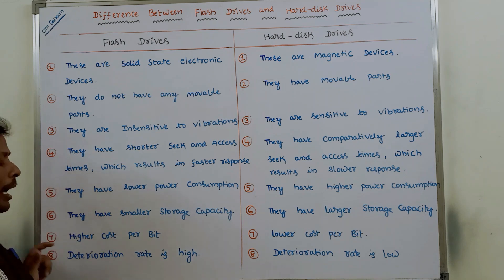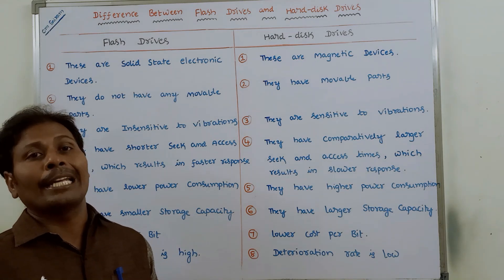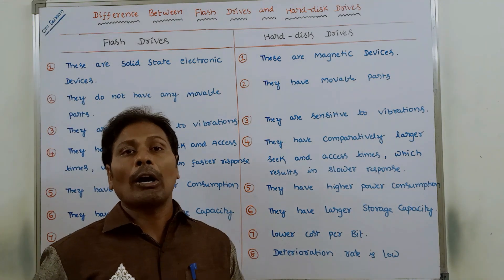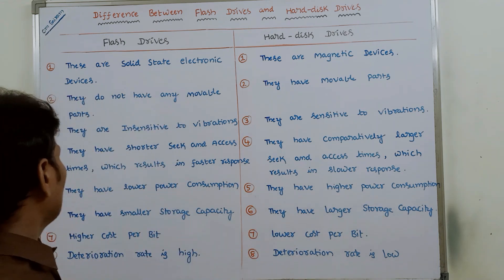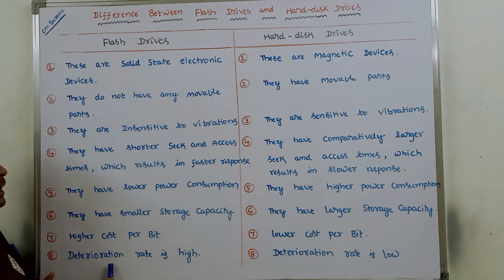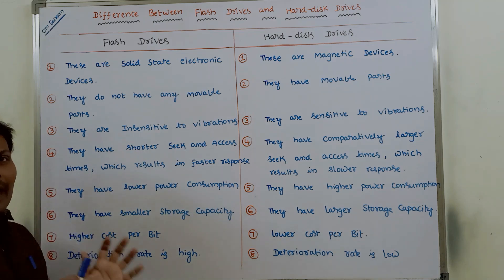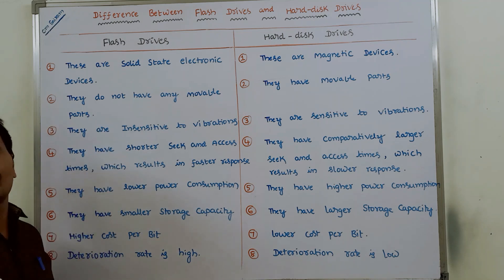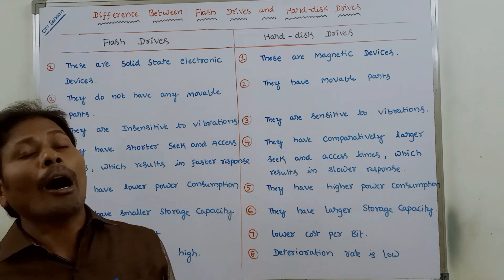The seventh point is that flash drives have a higher cost per bit — to store 1 bit of information in a flash drive, it takes higher cost, whereas in a hard disk drive it takes very less cost. The eighth point is that the deterioration rate is high in flash drives, whereas the deterioration rate is very low in hard disk drives.